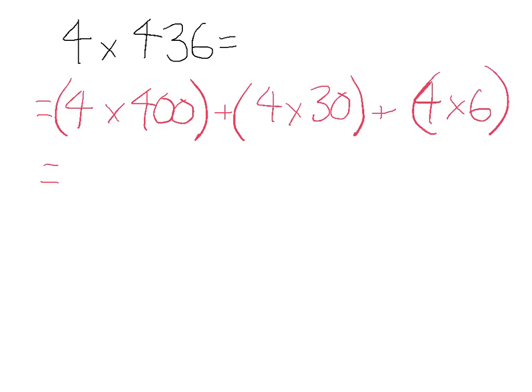Working those out individually, 4 times 400, we know that 4 times 4 is 16. So 4 times 400 is going to be 1600, plus 120.